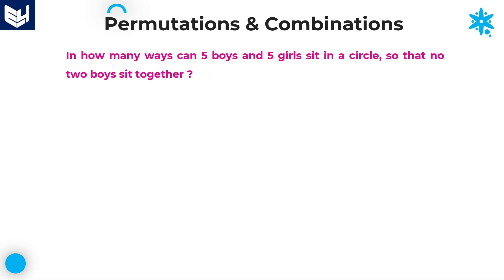Hi everyone, welcome to the session. In this session I will explain some more problems related to permutations and combinations. Let's see the first question: in how many ways can five boys and five girls sit in a circle so that no two boys sit together?